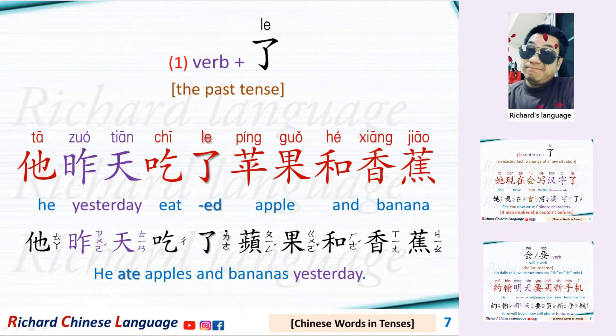A verb plus 了. This is the past tense. For example: 他昨天吃了苹果和香蕉 — He ate apples and bananas yesterday.